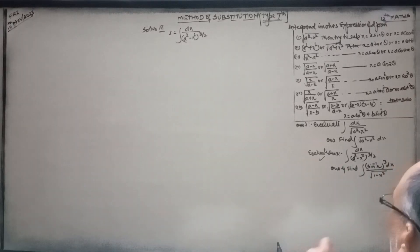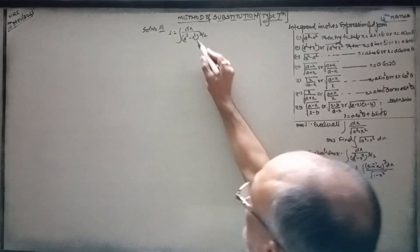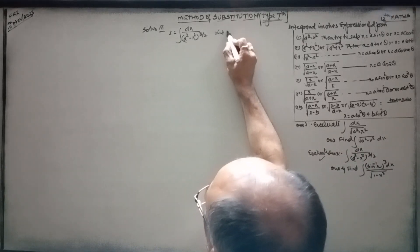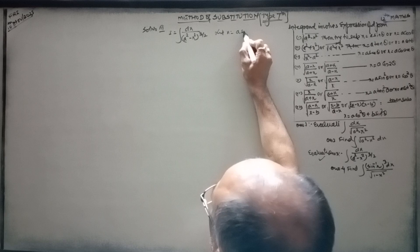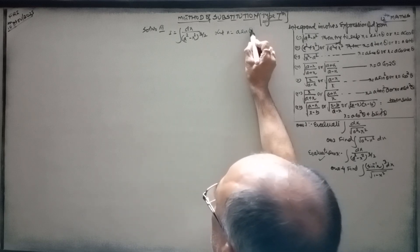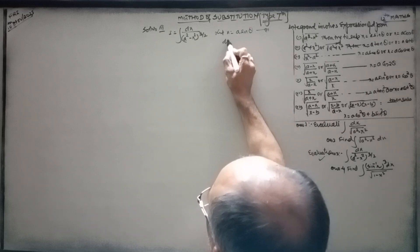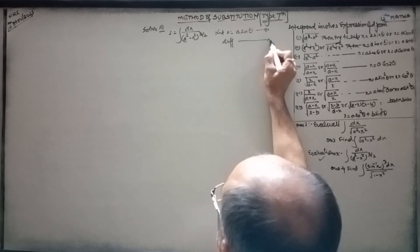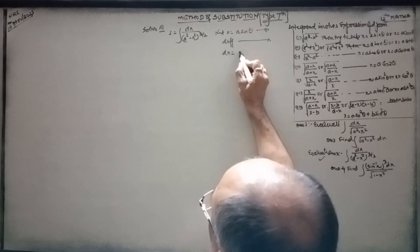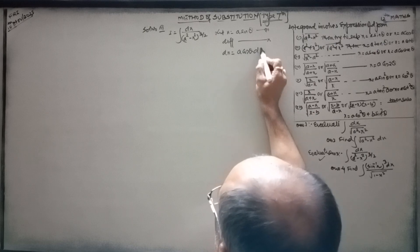The answer of the third problem we are finding. Let us substitute x equal to a·sin(θ). Differentiating both sides with respect to x, dx is equal to a·cos(θ)·dθ.